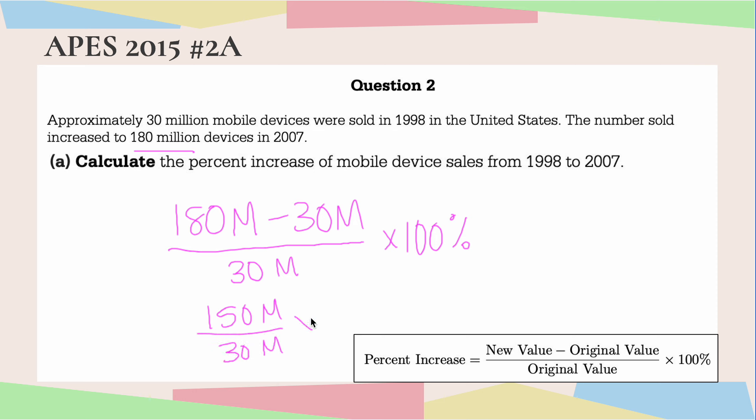And 150 million divided by 30 million, my millions are going to cancel out. My zeros are also going to cancel out. And then I'm left with 15 divided by 3...